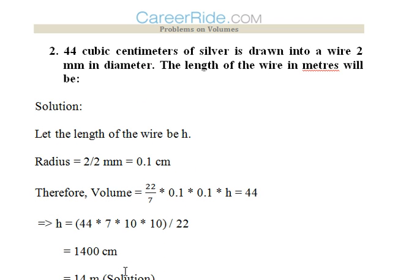Second question. 44 cubic centimeter of silver is drawn into wire 2 mm in diameter. Length of the wire in meters will be,